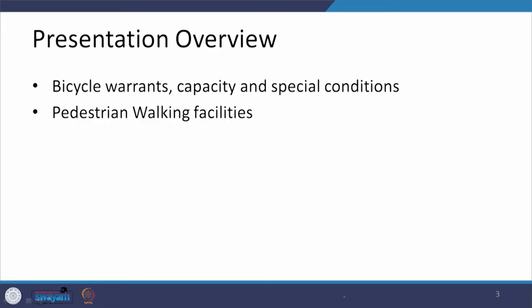In continuation of that, we are going to continue with the bicycle warrants in today's interaction, and then we will speak about the capacity and what needs to be done under specific conditions. Once we have done these things, we will be starting with another exclusive facility required for pedestrians — specifically the walking facility along the carriageway, that is the sidewalk. Let us start with the leftover portion of the bicycle facility.